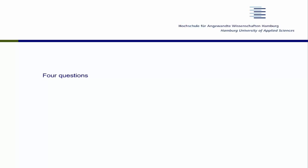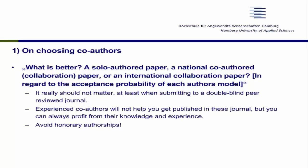The first question is about choosing co-authors: is it better to publish solo, with national co-authors, or internationally? In double-blind peer review, nobody sees who the authors are or how many there are, so that shouldn't matter for acceptance. However, experienced co-authors bring knowledge you can learn from. Please avoid honorary authorships — don't include your PhD advisor as an author if they didn't contribute. That is scientific misbehavior and will not increase your chances of acceptance.